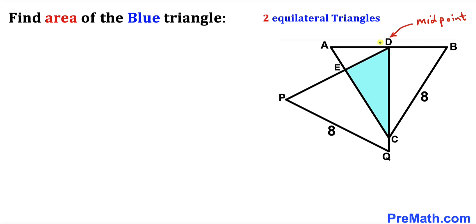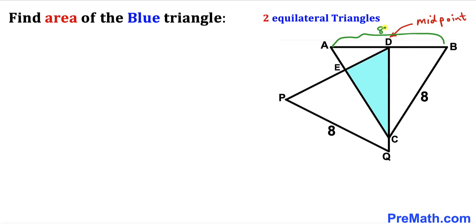D is the midpoint of line AB. We know the whole side length AB is 8, and since D is the midpoint, segment AD is 4 units and BD is 4 units as well.